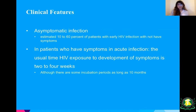Some clinical features: asymptomatic infections. It's estimated — and it's a wide estimate — 10 to 60 percent of patients with early HIV infection won't have symptoms. In patients who do have symptoms in acute infection, the usual time from HIV exposure to development of symptoms is two to four weeks, though some incubation periods are as long as 10 months.